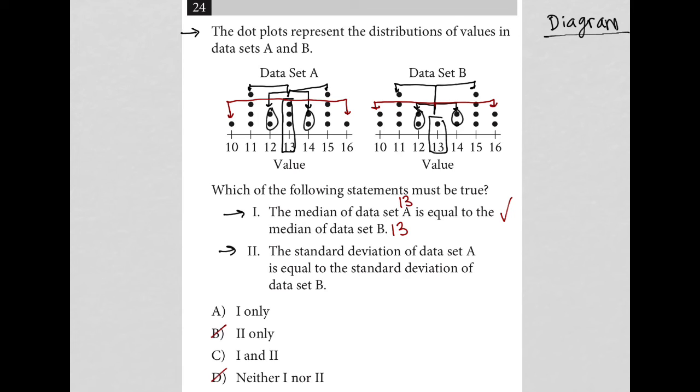So we have more data that is further away from the median for data set B than we have that are further away from the median for data set A. So that small divergence makes the standard deviation not exactly the same. So therefore only statement one is correct, making choice A the correct answer.